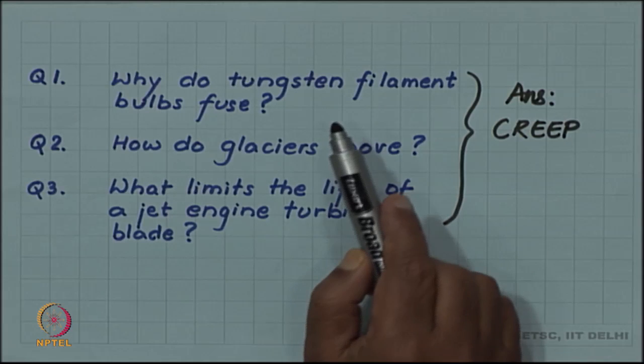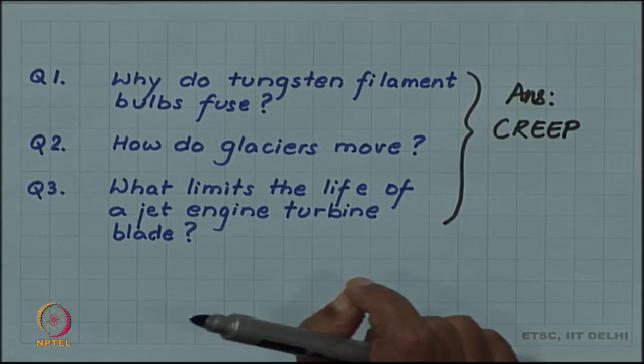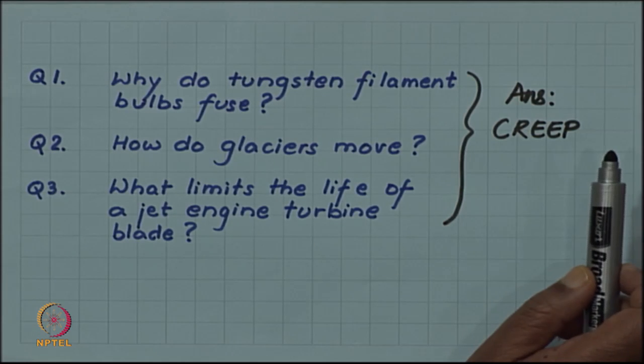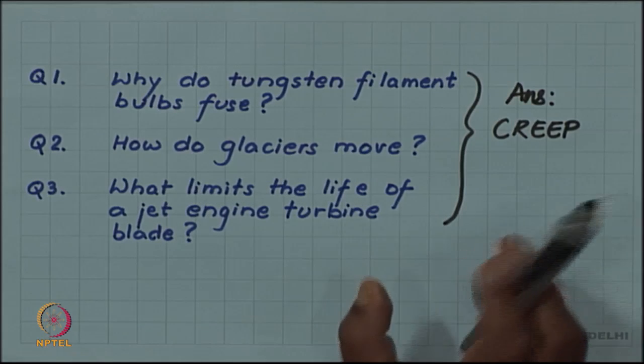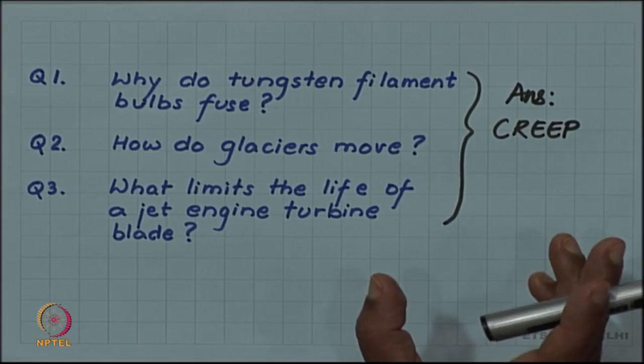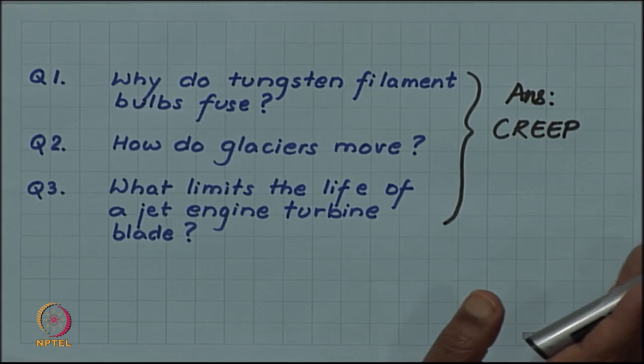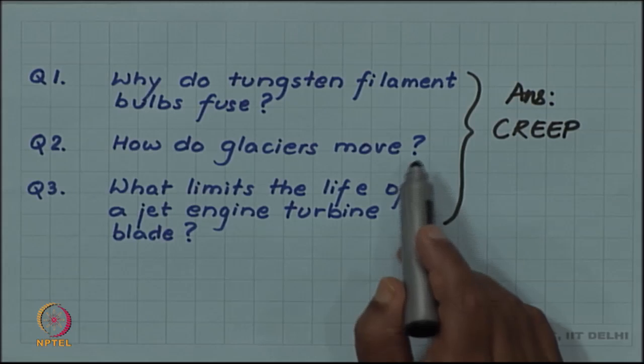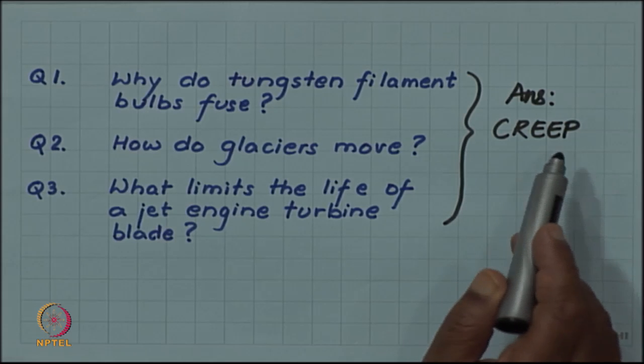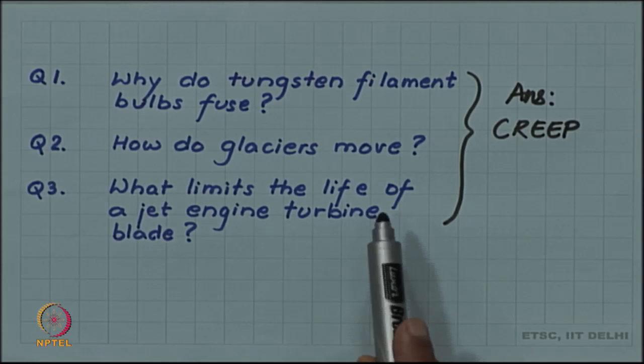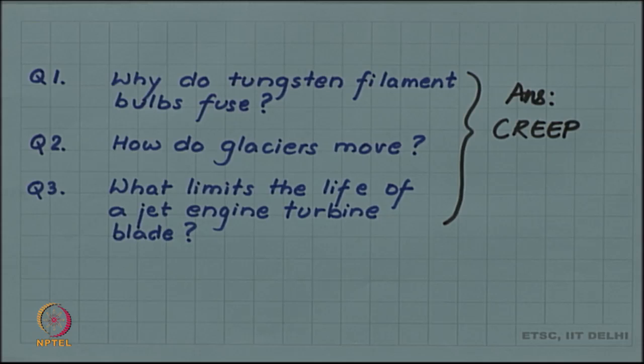The tungsten filament bulbs fuse because the tungsten filament actually fails or breaks by creep. Glaciers move because it is not simple sliding of ice mass, but actually this ice or snow deforms as the glaciers move and the deformation mechanism is that of creep. And the limit of the life of jet engines is also decided by the creeping of the blades.